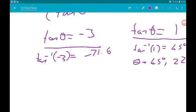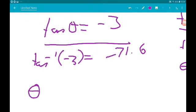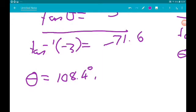Now that is outside of the range that we want. So to get our first value of theta, add 180, and that gives us 108.4. Then add 180 to that and we get 288.4 degrees.